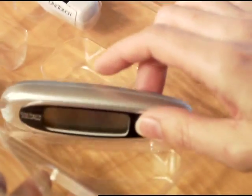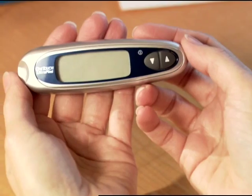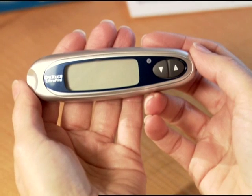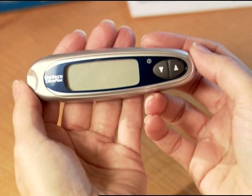Your OneTouch Ultra Mini meter comes with the battery already installed, so it's ready to use right out of the box. When reading information on the meter display, make sure to hold the meter like this, so that OneTouch Ultra Mini is to the left of the screen.